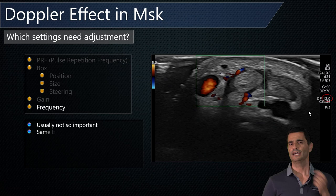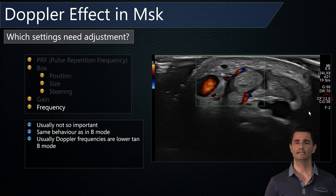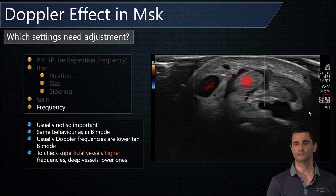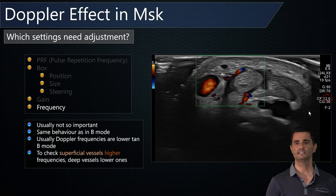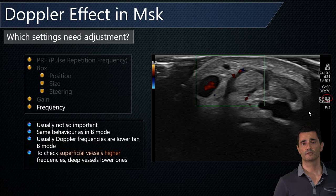Frequency behaves the same as in MSK B-mode imaging. Higher frequencies are used for superficial vessels and lower frequencies for deep vessels. For example, at 12 MHz you get a good view of superficial vessels, but switching to 8 MHz reduces sensitivity. So use higher frequencies like 12 MHz for very superficial vessels, and decrease frequency for deeper vessels.